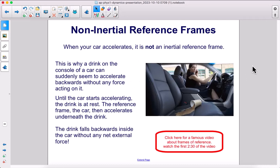When your car accelerates, it's not an inertial reference frame. This is why a drink on the console of a car can suddenly seem to accelerate backwards without any force acting on it. Until the car starts accelerating, the drink is at rest. The reference frame, the car, then accelerates underneath the drink. The drink falls backwards inside the car without any net external force.